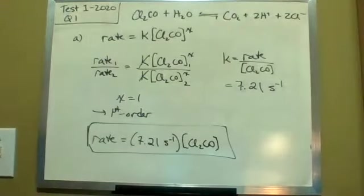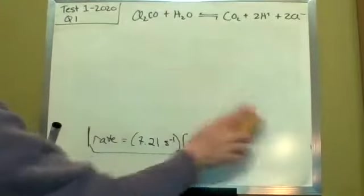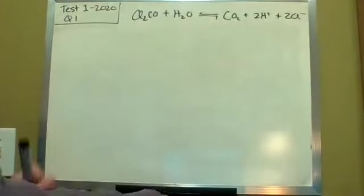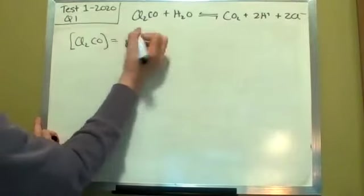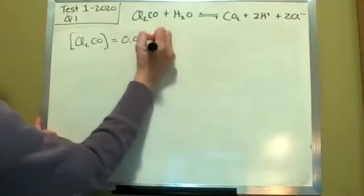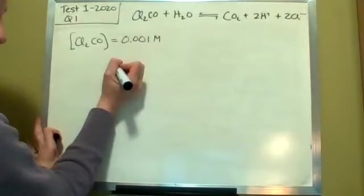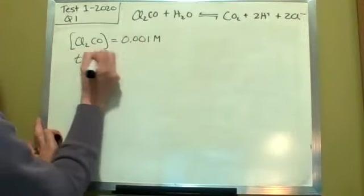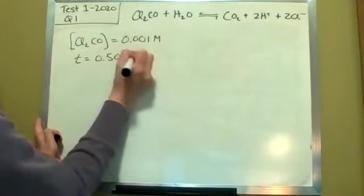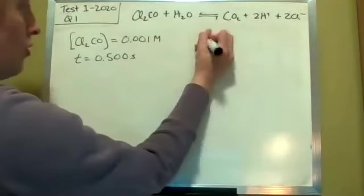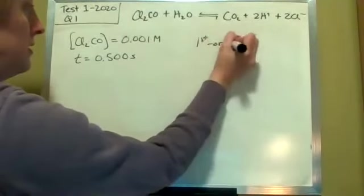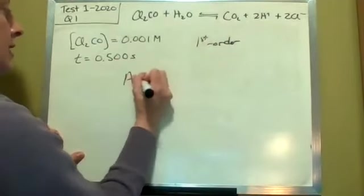Part B asks if a soldier gets a certain amount, certain concentration on the lungs, how much is going to react after 0.5 seconds. So you are told that that initial concentration of phosgene is 0.001 molar. And you're given a time of 0.5 seconds. Just get an idea of how fast this goes. You know this is first order.